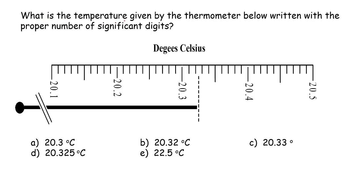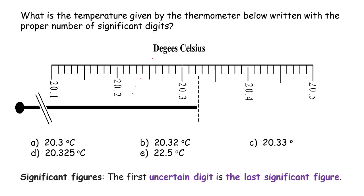What is the temperature given by the thermometer below written with the proper number of significant digits? Significant digits are also called significant figures. And the definition for significant figures, also called sig figs, is the first uncertain digit is the last significant figure.